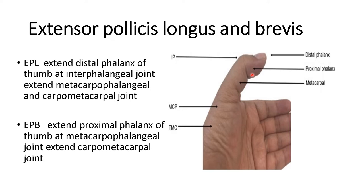This is the distal phalanx and this is the proximal phalanx of the thumb, and this is the metacarpal bone. The joint between these phalanges is the interphalangeal joint, the joint between the metacarpal and the phalanx is the metacarpophalangeal joint, and the joint between the metacarpal and the carpal is the carpometacarpal joint.